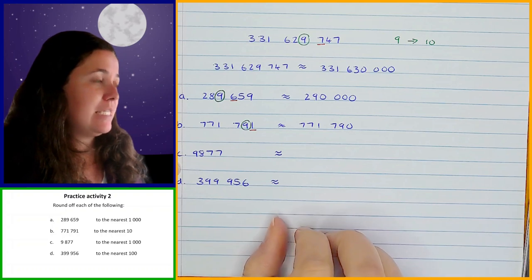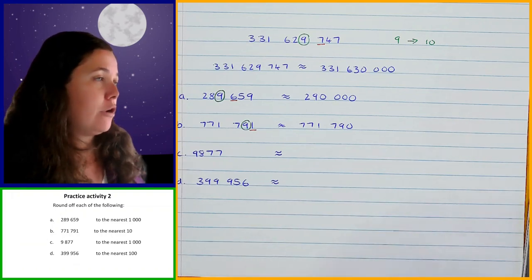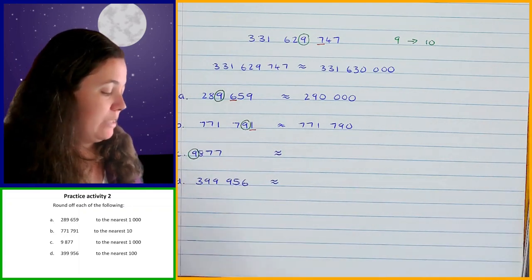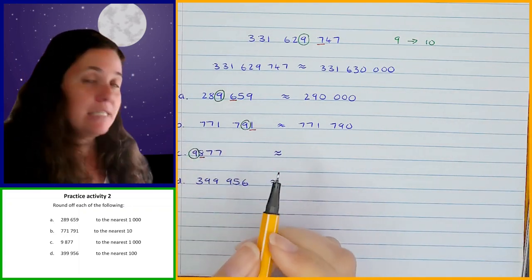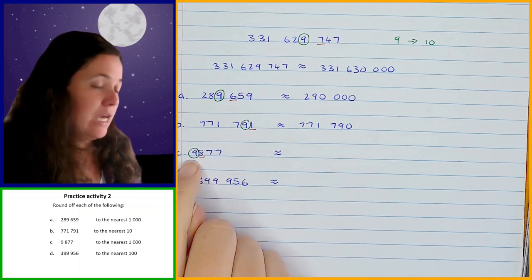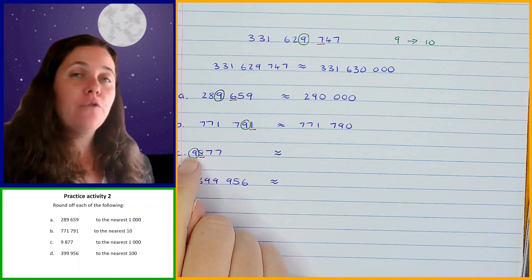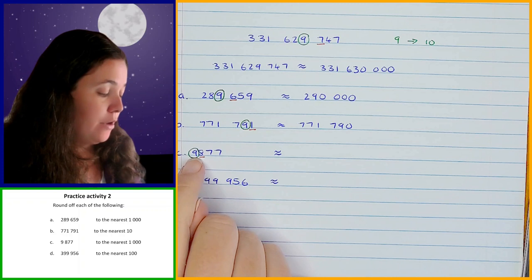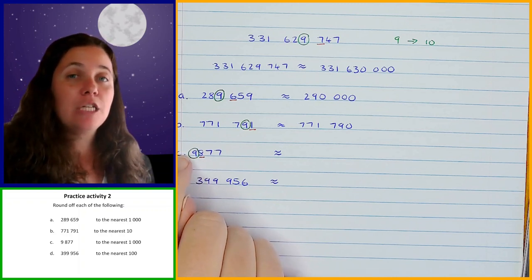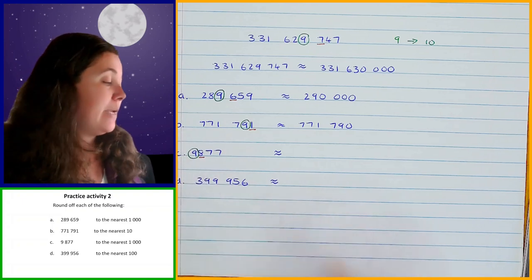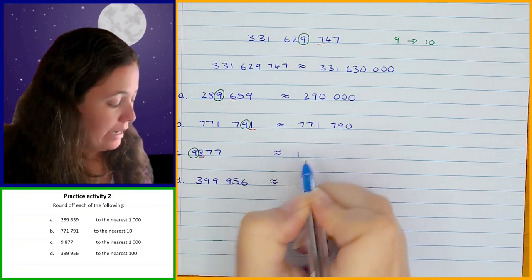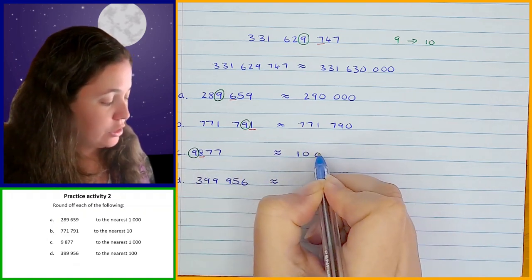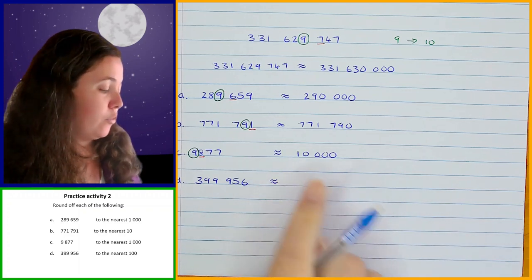The next one: we've got 9,877 and we're rounding off to the nearest thousand. The digit in the thousandth position is the nine. We look at the digit after it — the eight. Eight is in the five or more category, so the nine goes up one. There's no digit in front of the nine, but there is effectively a zero there — and that zero goes up one and becomes one. So the answer is 10,000.